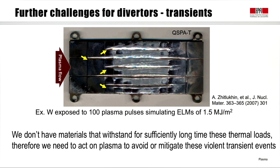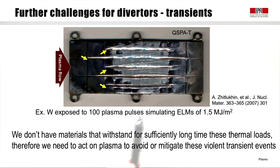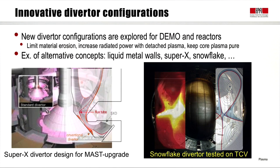We simulate in plasma devices simpler than tokamaks what happens to materials facing these thermal loads. In the QSPA facility, tungsten was exposed to about 100 plasma pulses simulating ELMs at 1.5 MJ/m² — the damage to the tungsten is very clearly visible. We do not currently have materials that can last sufficiently long under these thermal loads, so we need to evolve both in materials and in our capability of avoiding or mitigating these transients.